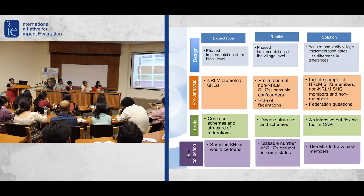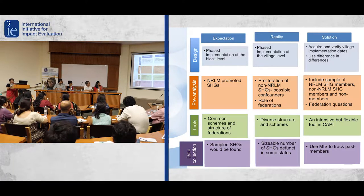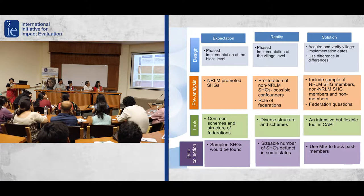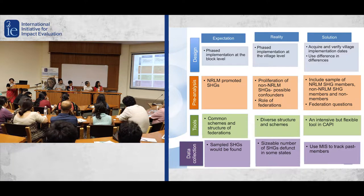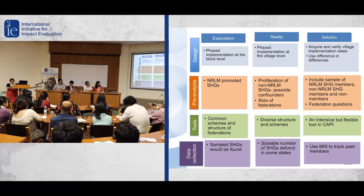The second assumption challenged in the field was that we would find only NRLM-promoted SAGs if we focused on blocks and villages where NRLM was operating. In reality, there was a proliferation of non-NRLM SAGs which could have been doing different things and could confound the impact of NRLM itself. Our solution was to propose a sampling strategy that would include NRLM SAG members, non-NRLM SAG members, and non-SHG members.